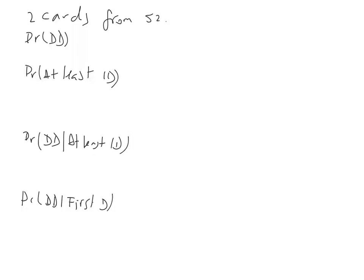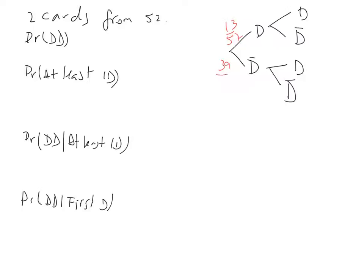We've got diamonds or not diamonds. From there, we can also put that into another tree — we can have another branch with diamonds or not diamonds, and diamonds or not diamonds. Now, this is where it gets interesting. We know that we've got 13 out of 52 diamonds, and we've got 39 out of 52 not diamonds.